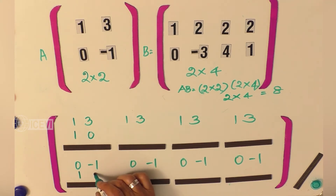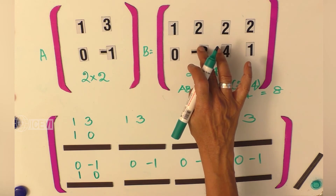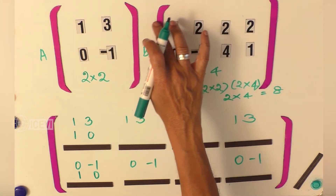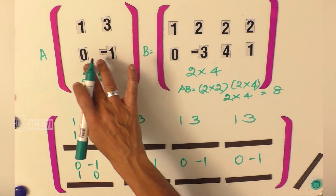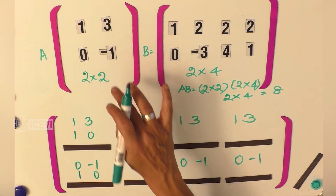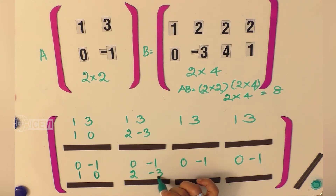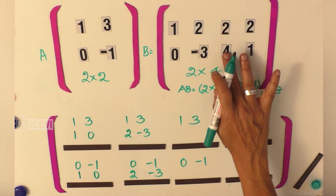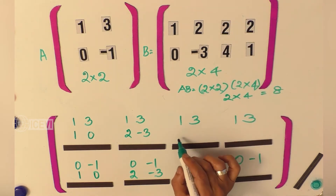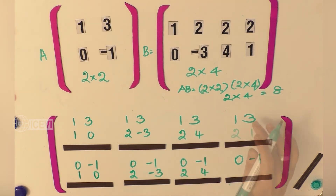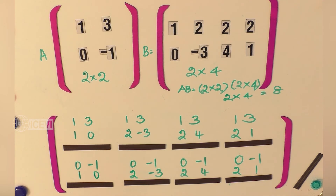The second column is dragged: 2 goes under the 1, minus 3 goes under the 3. Similarly 2 goes under 0 and minus 3 goes under minus 1, giving 2, minus 3 and 2, minus 3 in the second column of the product matrix. The third column of matrix B is 2, 4 — going to the third column of the product matrix. Similarly the fourth column of matrix B goes to the fourth column of the product matrix.